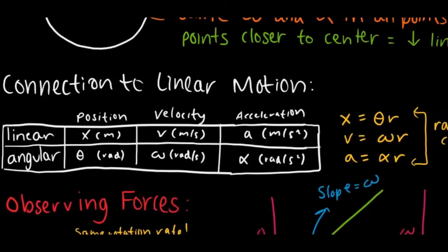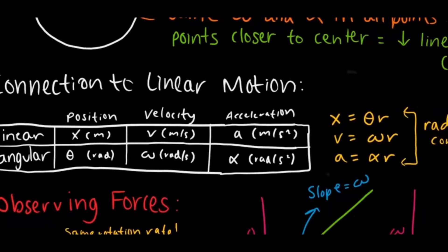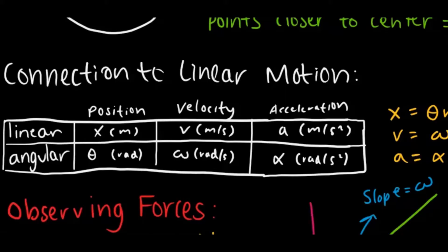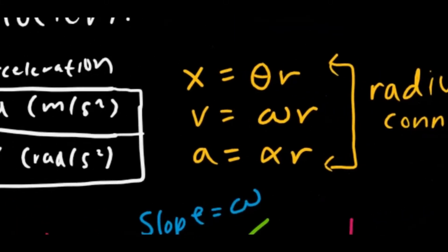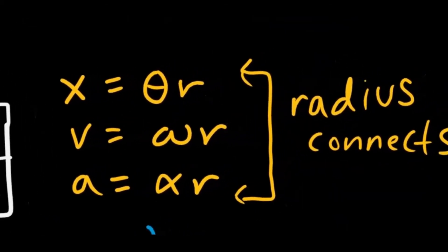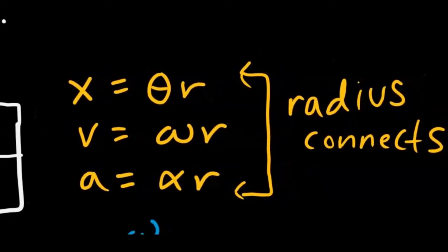Here's another very important key concept: the connection between linear motion and angular motion. So for linear, you have your x, which is equivalent to the angular angle; the linear velocity and the angular velocity; linear acceleration and angular acceleration. And you can easily convert between both linear and angular values by just using the radius. So the radius sort of connects both the linear and angular components.